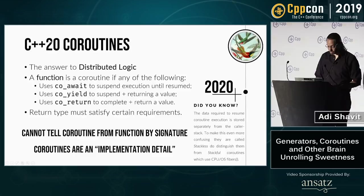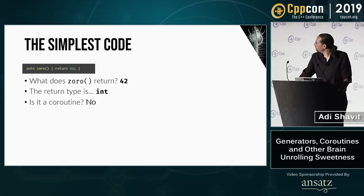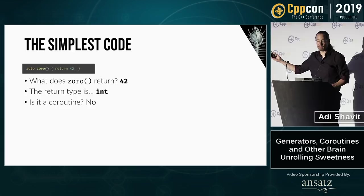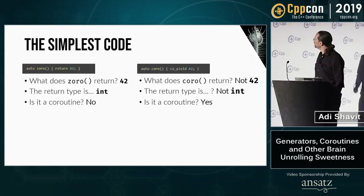Let's see some code. Here's a little function called Zorro. What does Zorro return? Returns 42. The return type is int, of course. Is it a coroutine? No, it isn't — we saw its body, and it doesn't use one of the special keywords. Here's another function called coroutines. What does it return? Actually it doesn't return 42, the return type is not int, and of course it's a coroutine because it uses the co_yield keyword.